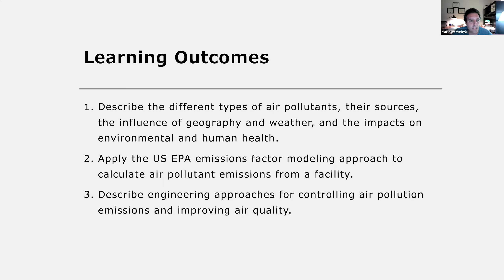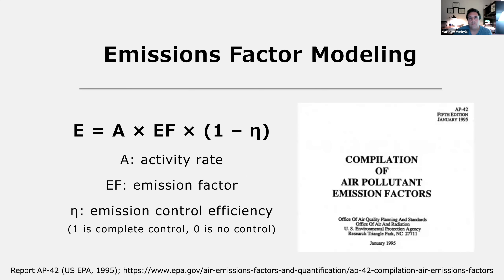This video focuses on the second learning outcome: applying the US EPA emission factor modeling approach to calculate air pollution emissions. The approach uses a core equation where emissions are estimated by multiplying the activity rate A by the emission factor EF. If an engineering control removes pollutants from the airstream, we also multiply by 1 minus nu, where nu is the emission control efficiency. A value of 1 means 100% removal, and 0 means no control.